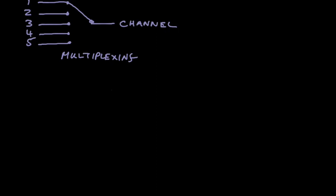As you can see there, we have a number of data streams coming in 1, 2, 3, 4 and 5 in the diagram, and we have an electronic switch that quickly switches between the various streams, directing one or other of the streams to the channel.